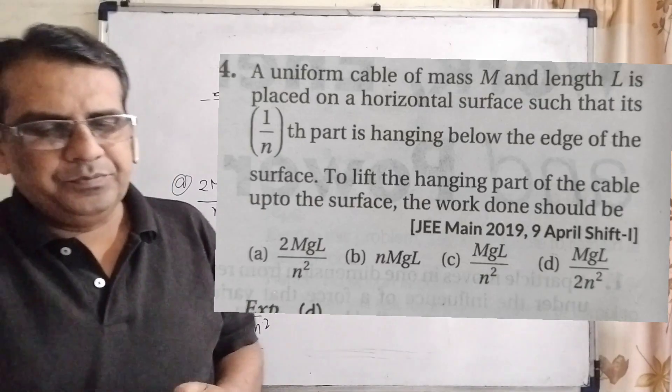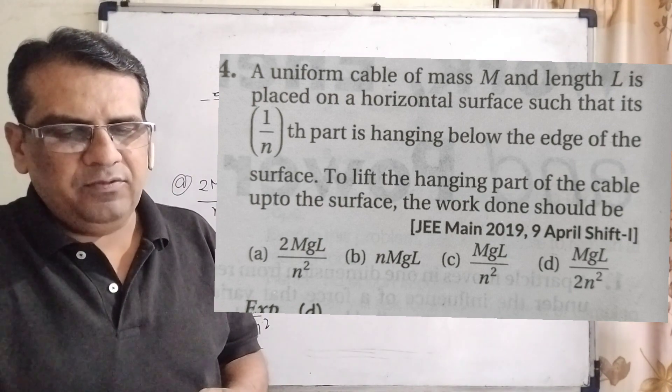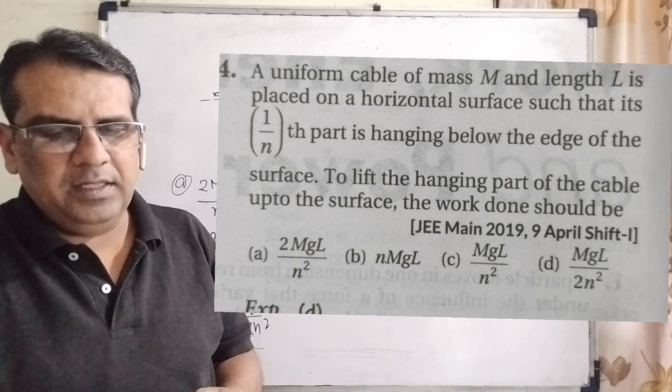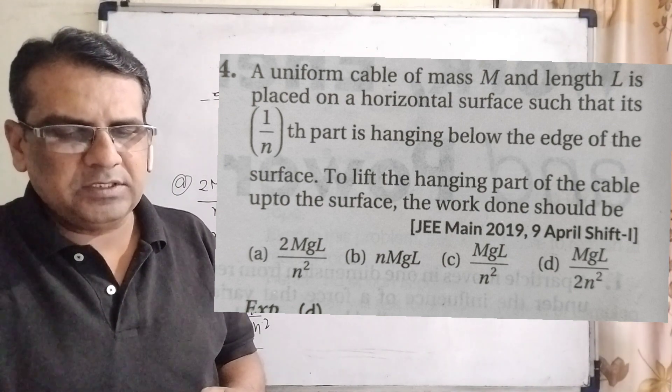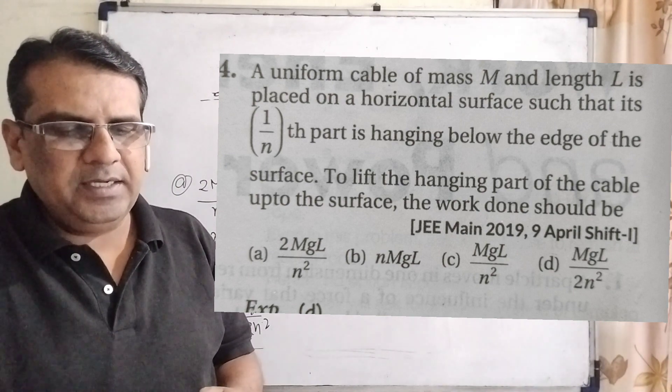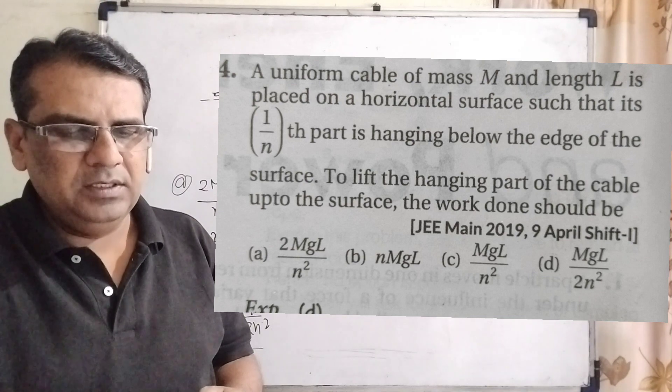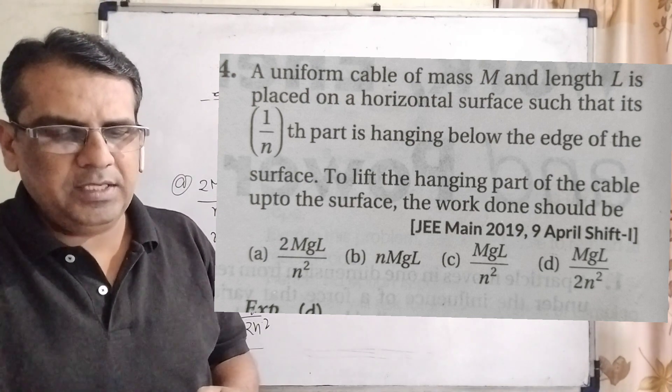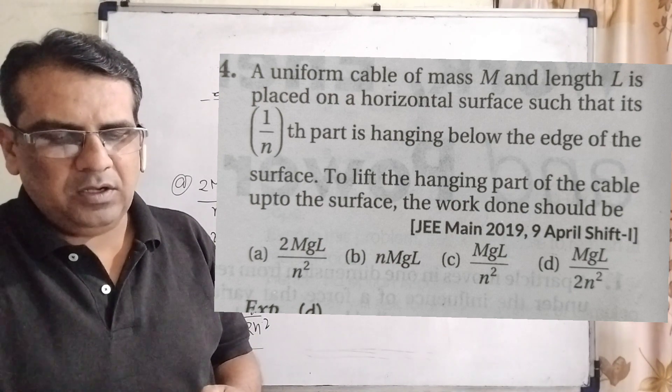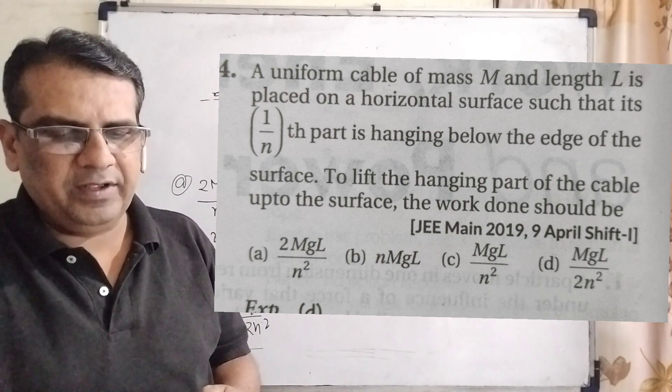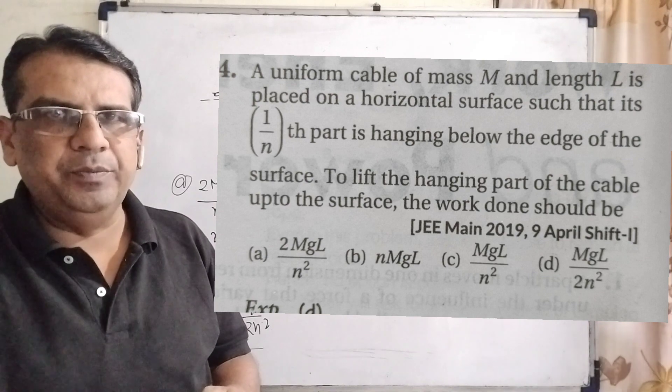The question says: a uniform cable of mass capital M and length capital L is placed on a horizontal surface such that its 1 by nth part is hanging below the edge of the surface. To lift the hanging part of the cable up to the surface, the work done should be.